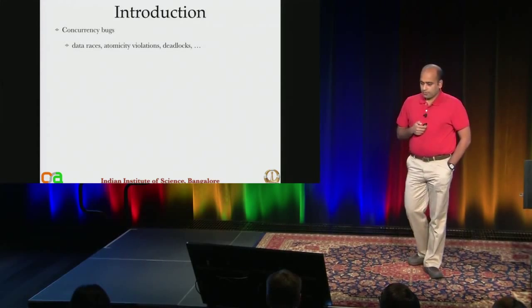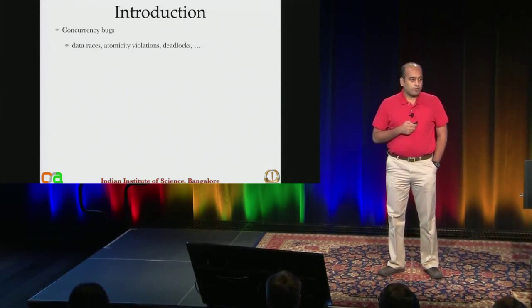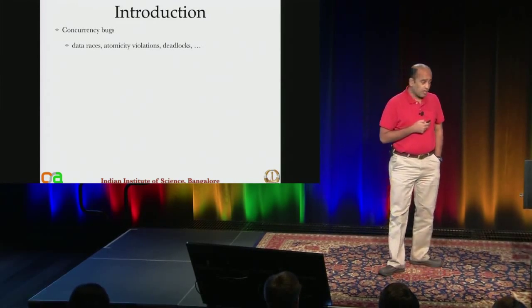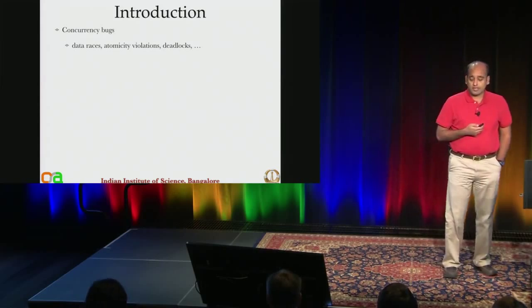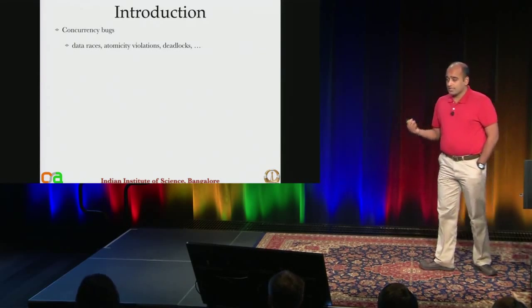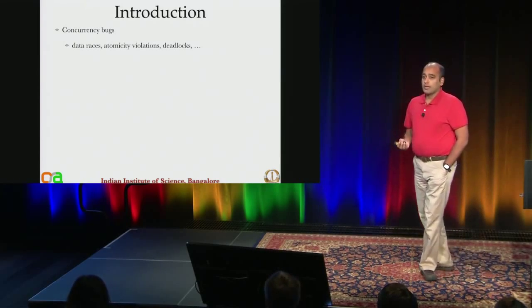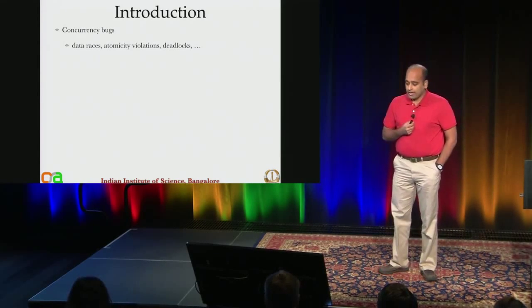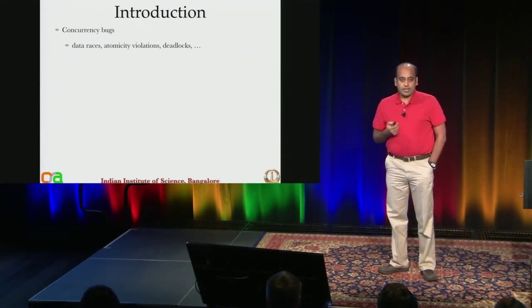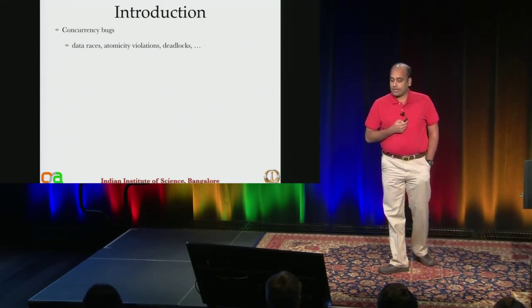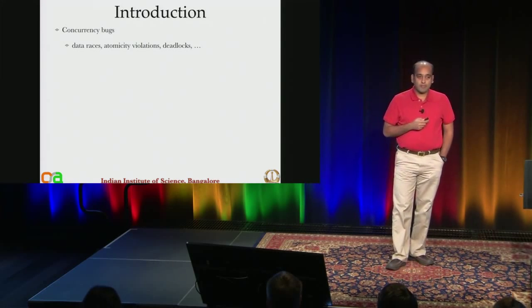We are all aware of what concurrency bugs are and how problematic they can be. These are some of the main reasons behind flaky bugs. We have data races, atomicity violations, and deadlocks.